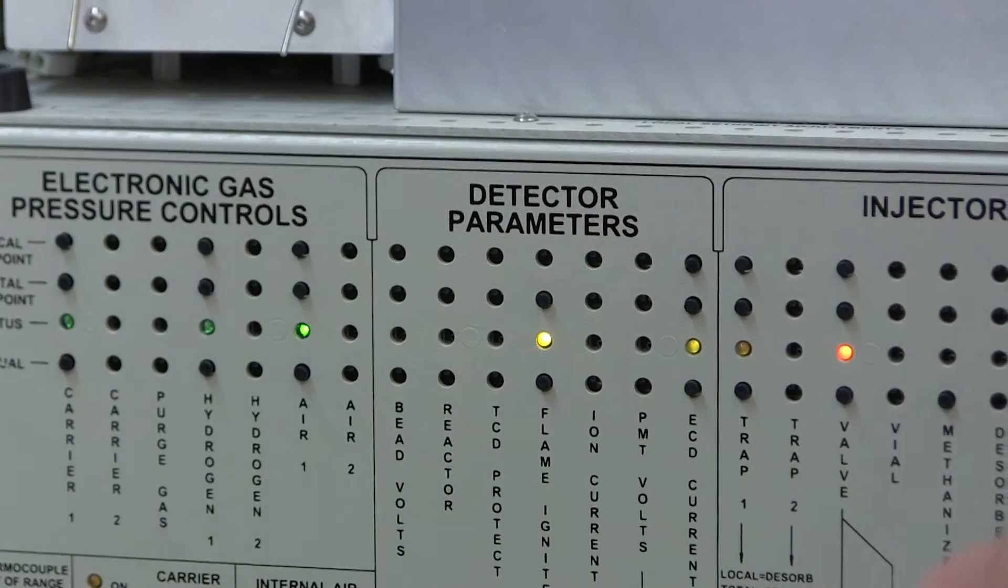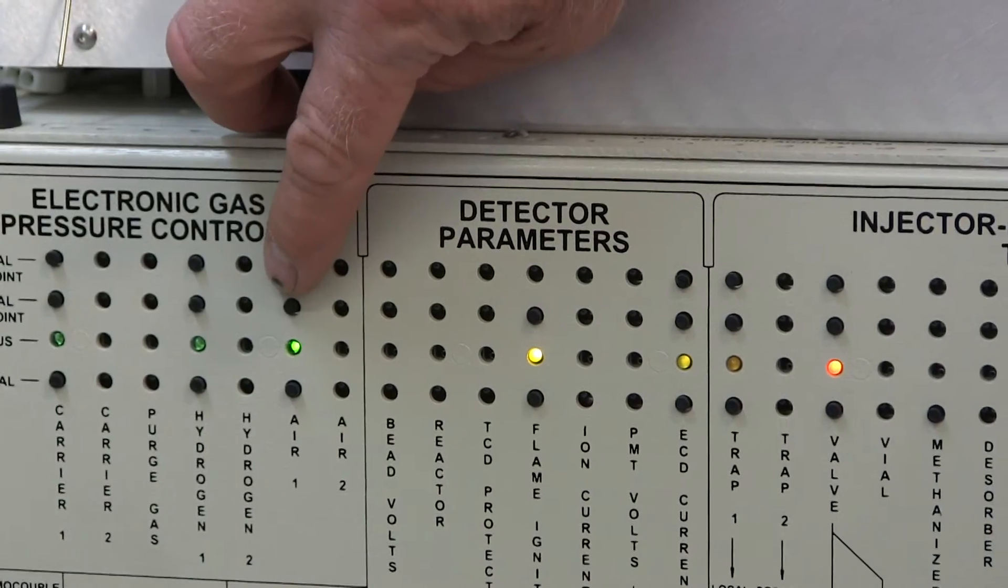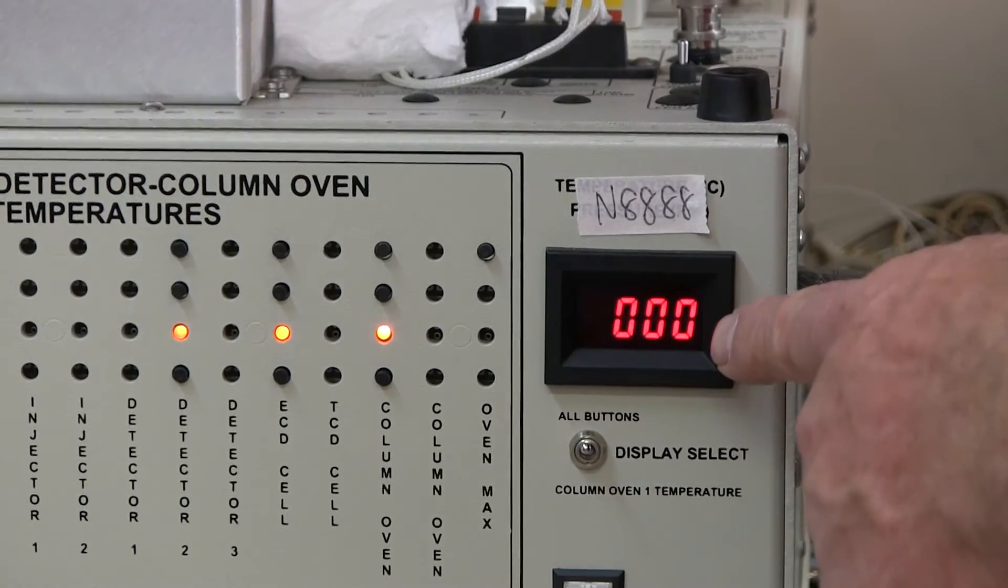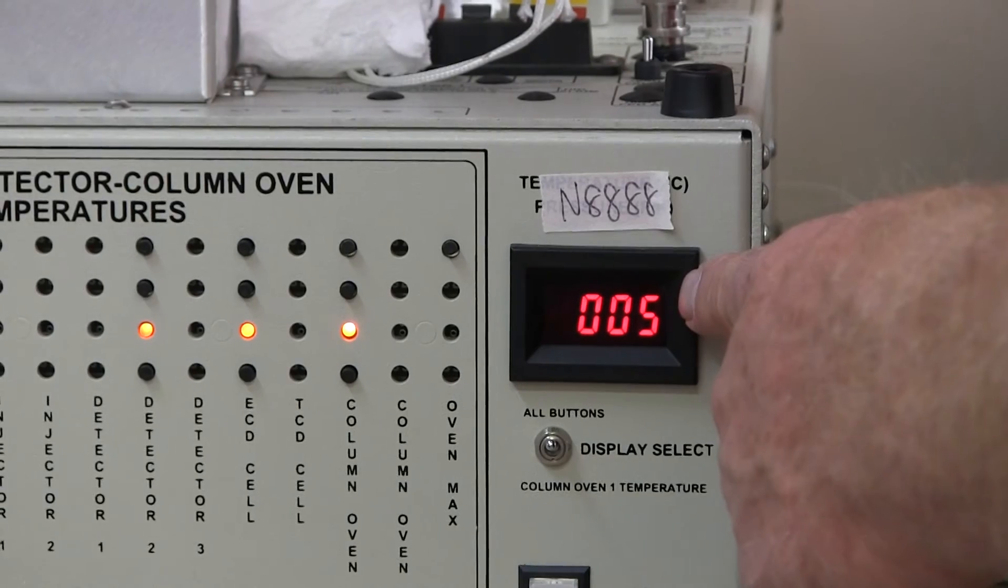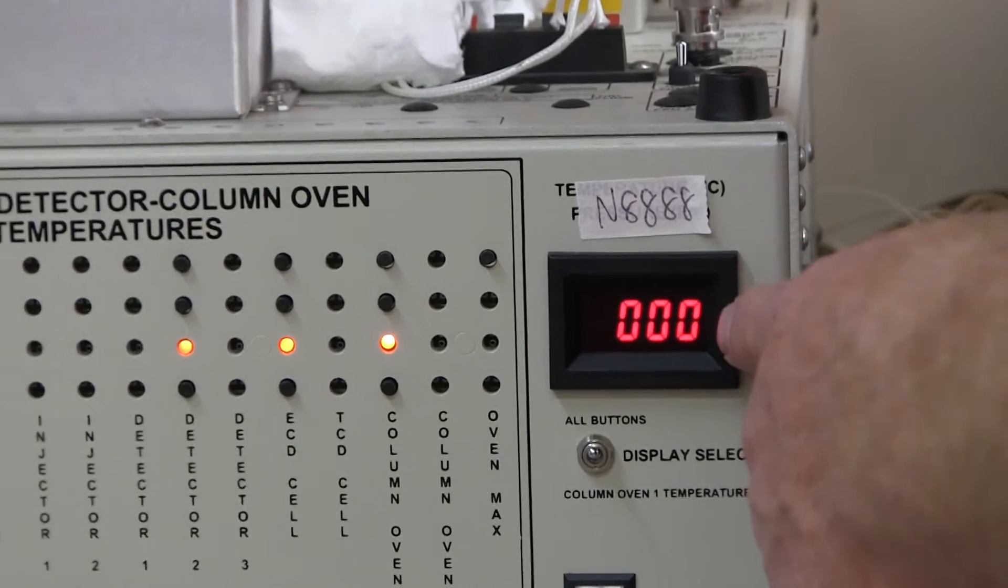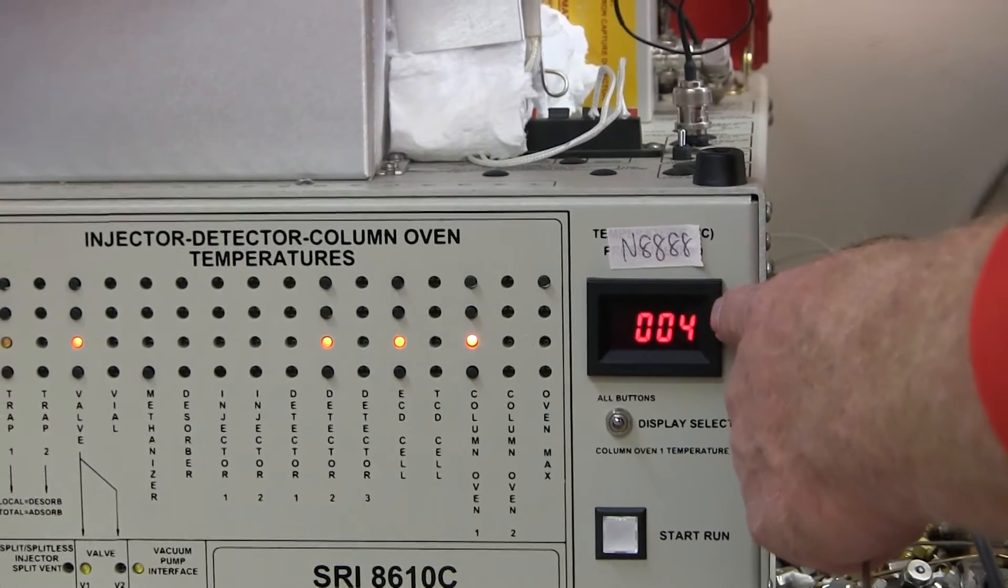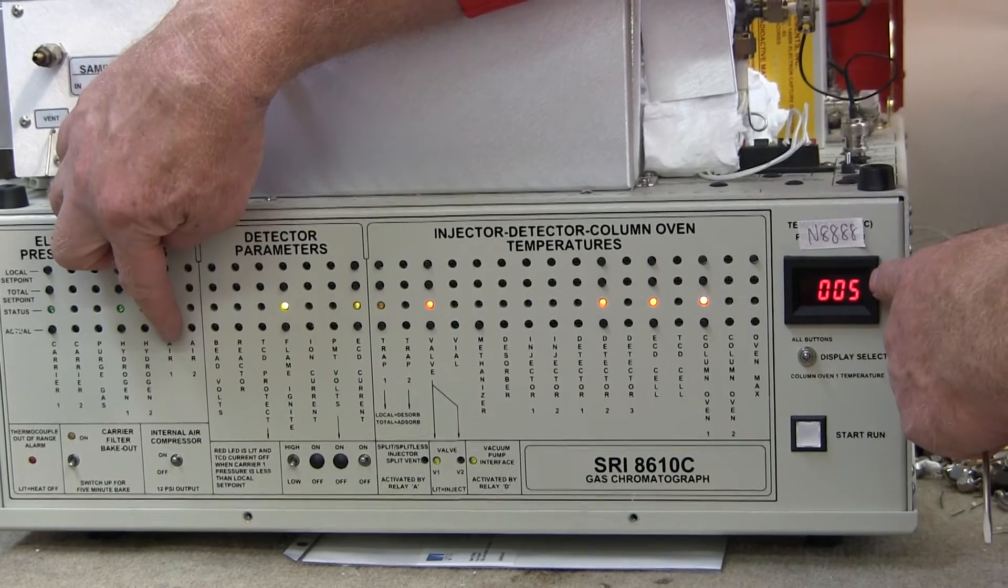The air, the top button shows you what you're setting the air to. In this case it's 5 PSI. When I push the top button, it shows 5 PSI on this display. If I push the bottom button, it also shows 5 PSI. The top button is the set point, what we want it to be, and the bottom is the actual.